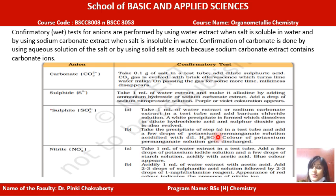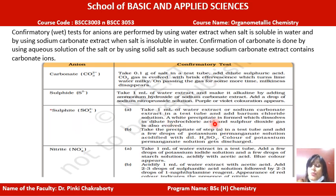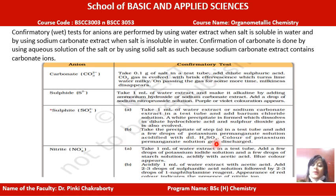The second confirmatory test for sulphite: take the barium sulphite precipitate and add potassium permanganate solution — which is very dark purple — along with H2SO4. If the colour of potassium permanganate gets discharged or disappears, that also confirms SO3²⁻. This happens because the oxidation state of manganese changes from +7 to +2, and once it becomes +2 the solution becomes colourless.